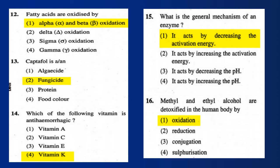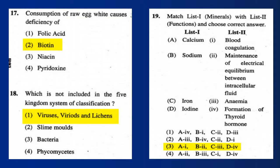Question 15 answer: It acts by decreasing the activation energy. Question 16: Methyl and ethyl alcohol are detoxified in the human body by oxidation. Question 17: Consumption of raw egg white causes deficiency of biotin.